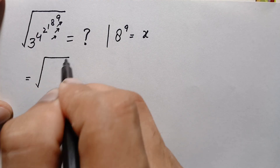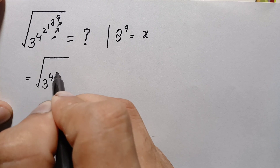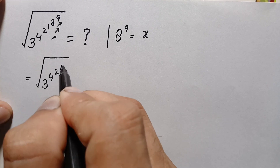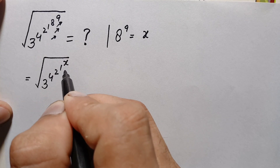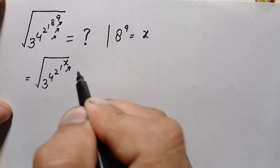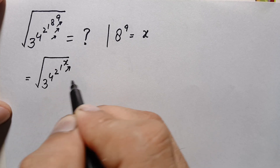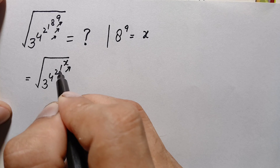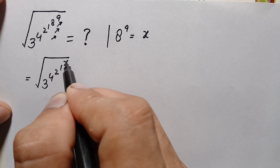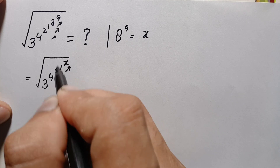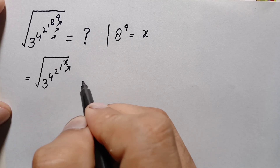This gives us: whole square root of 3 raised to power 4, raised to power 2, raised to power 1, raised to power x. Now we simplify 1 raised to power x. Remember that when we have 1 in the base and x is any number, any power, it is always equal to 1.